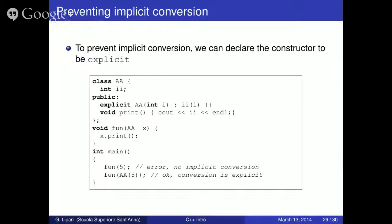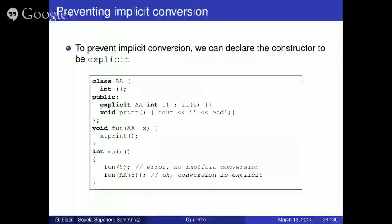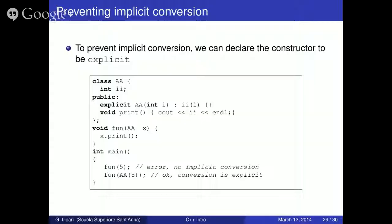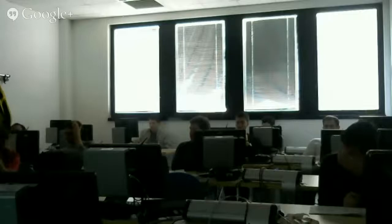Question: what if we also had a constructor of AA which takes a float? So we have two constructors — one which takes an int and one which takes a float. What if we call fun(5)? It is legal, and it uses the integer constructor because it is the closest one. If you want to call the other one, you have to specify that 5 is a float — either write 5.0f or 5.0. But never write two functions that differ only between int and float.